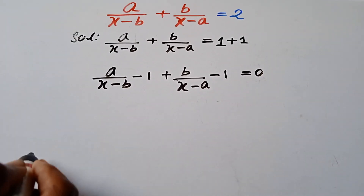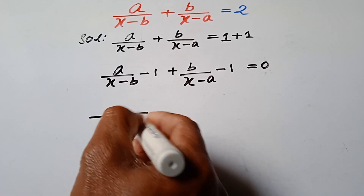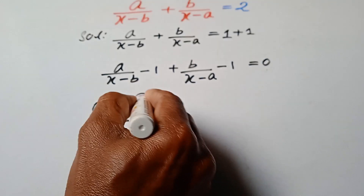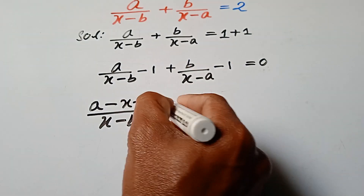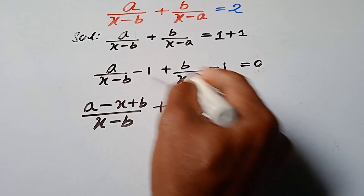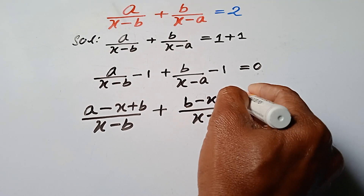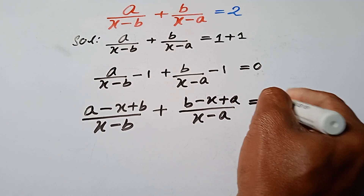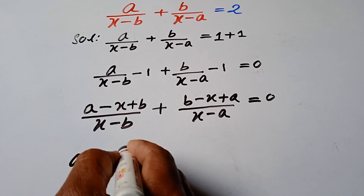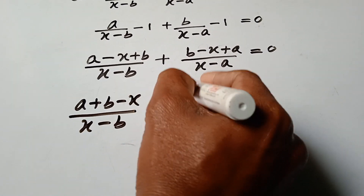Using LCM x minus b: a minus x plus b. Using LCM x minus a: b minus x plus a. This gives a plus b minus x over x minus b plus a plus b minus x over x minus a is equal to 0.